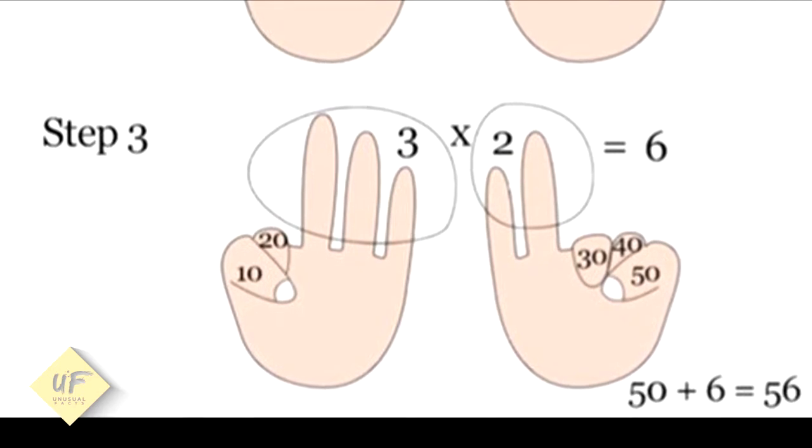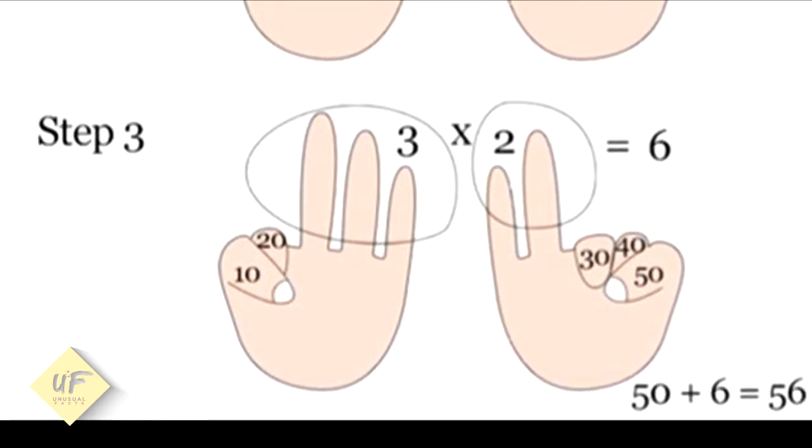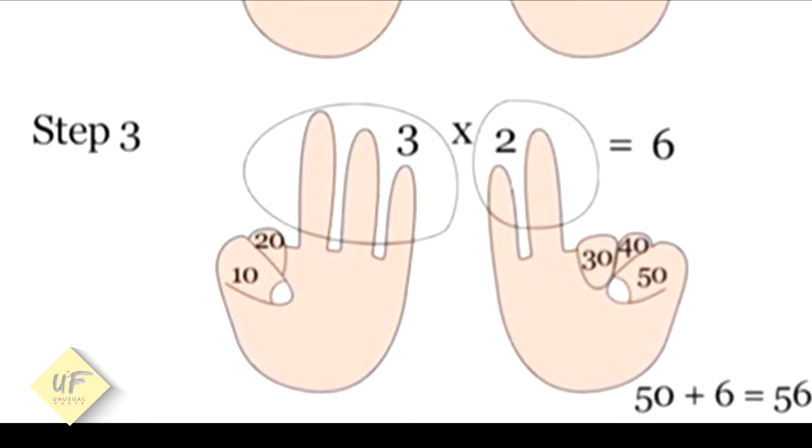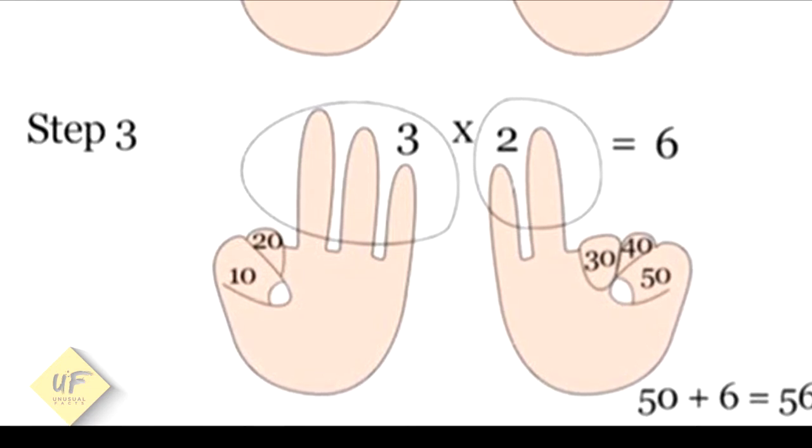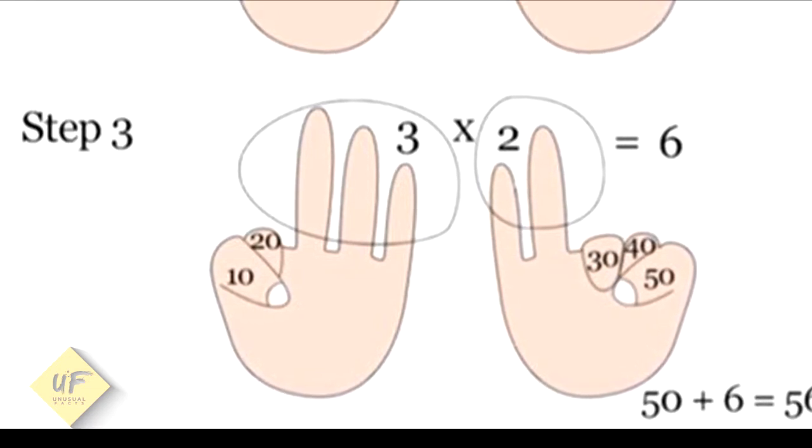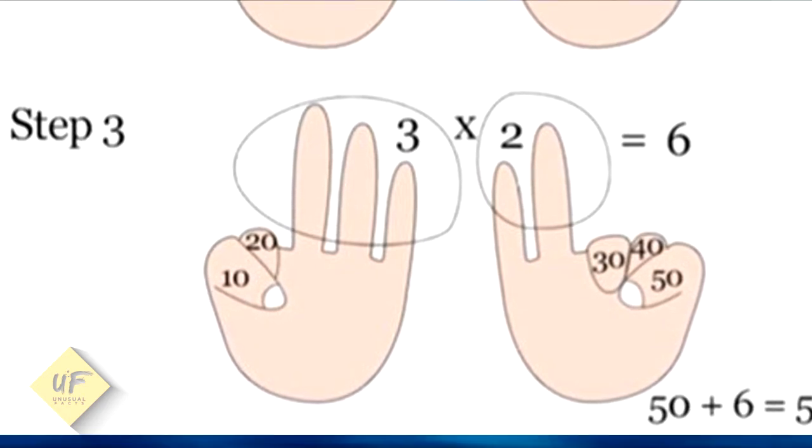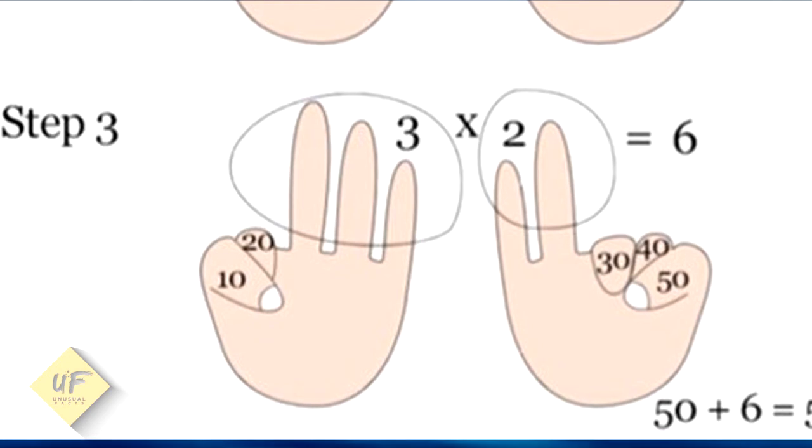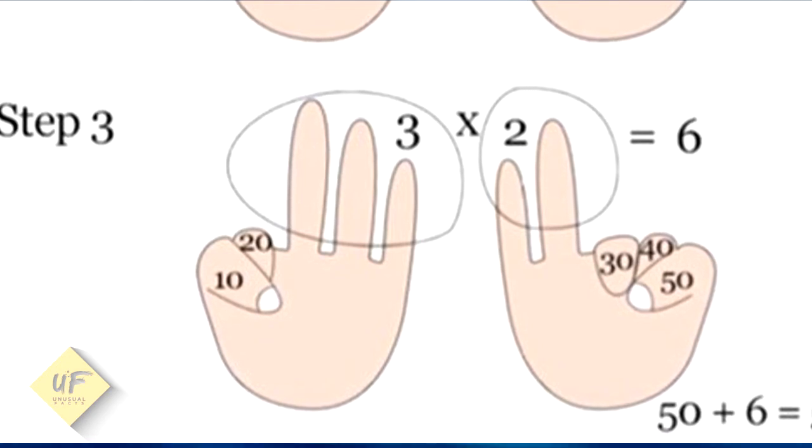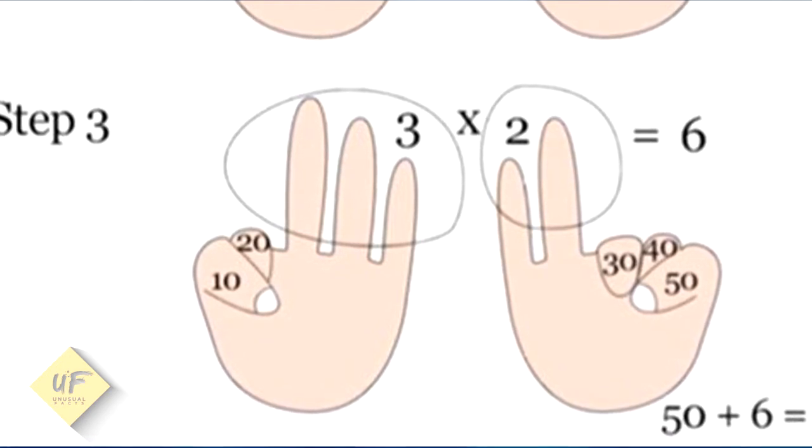Now each one of these fingers put down becomes 10, 20, 30, 40, or 50, as you see in the diagram. The fingers that are left, 3 and 2 fingers, get multiplied together, which equals 6. Now you have 10, 20, 30, 40, 50 plus 6 is 56. 7 times 8 is 56.